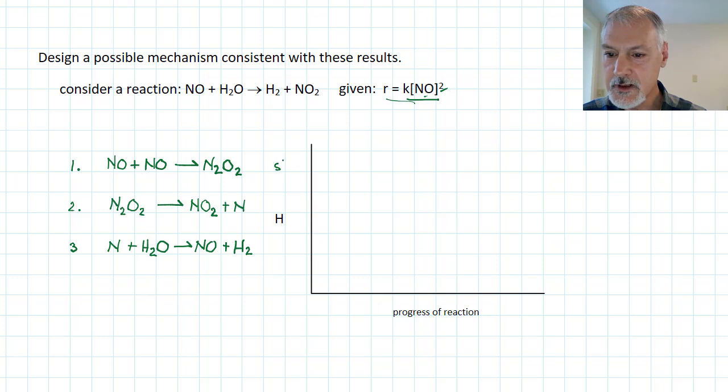This I've already identified as being my slowest step in my mechanism from here. Let's check what the total is when we add this all up. That one will cancel with that one. The nitrogen will cancel with that nitrogen. And this nitrogen oxide will cancel with this nitrogen oxide. So my overall reaction, if I look at what's left, nitrogen oxide, water, producing nitrogen dioxide and hydrogen. So indeed, I have a match with my overall equation. So this would be an acceptable mechanism consistent with this experiment.